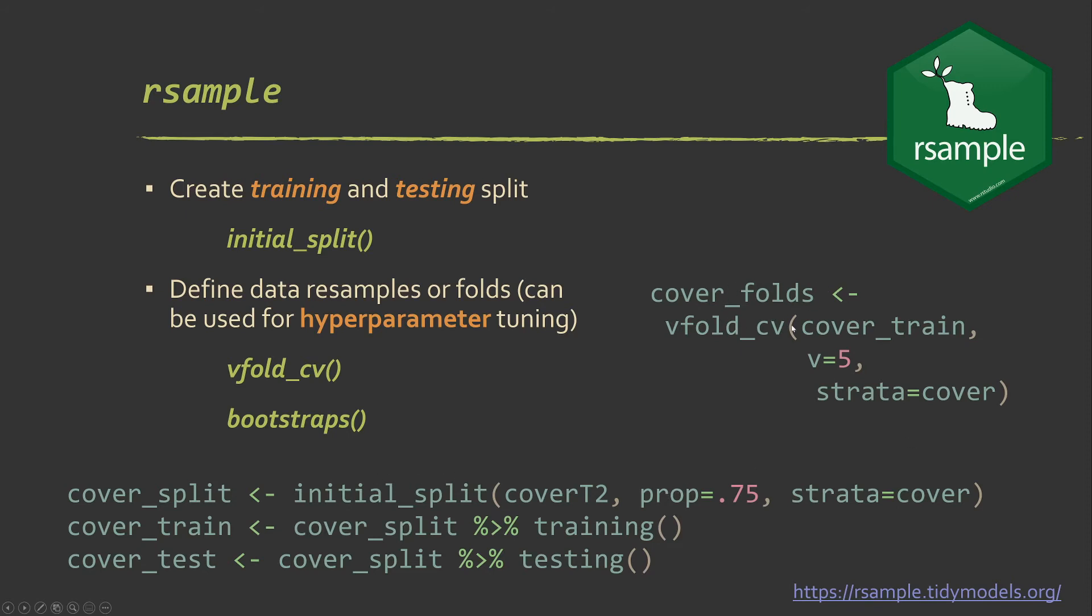This is an example for setting up folds for cross-validation. So we give it the training data, five-fold, and then we're going to try to maintain balance across the different classes by setting the strata there.